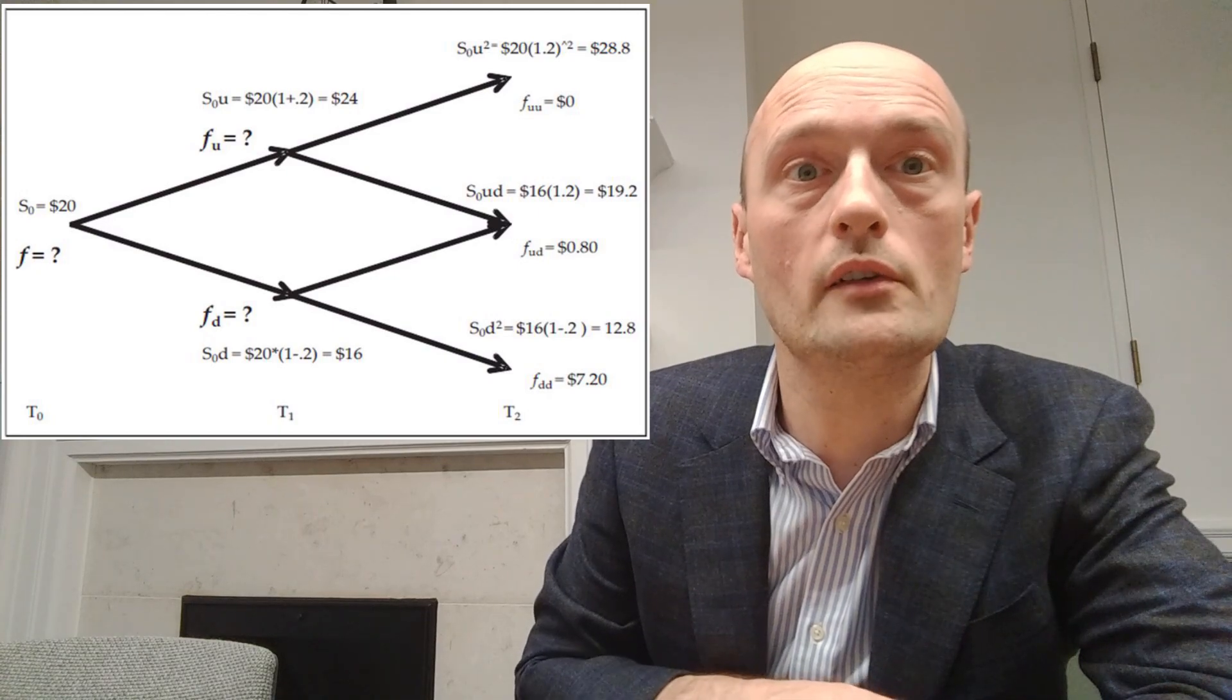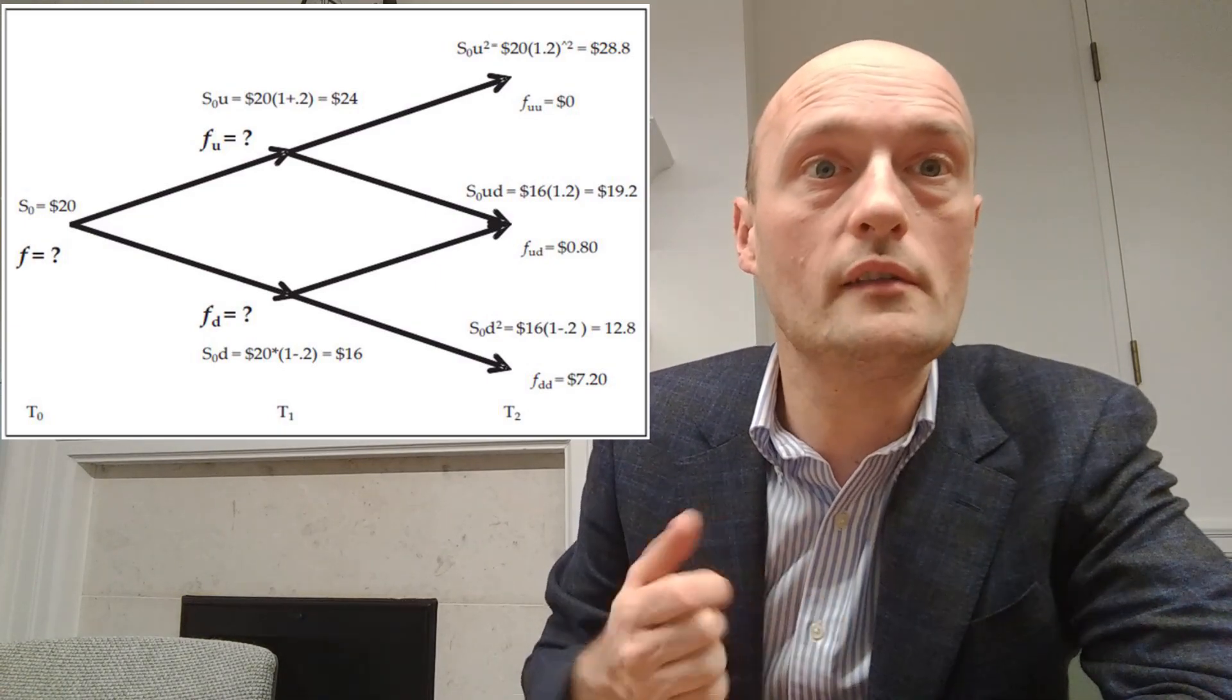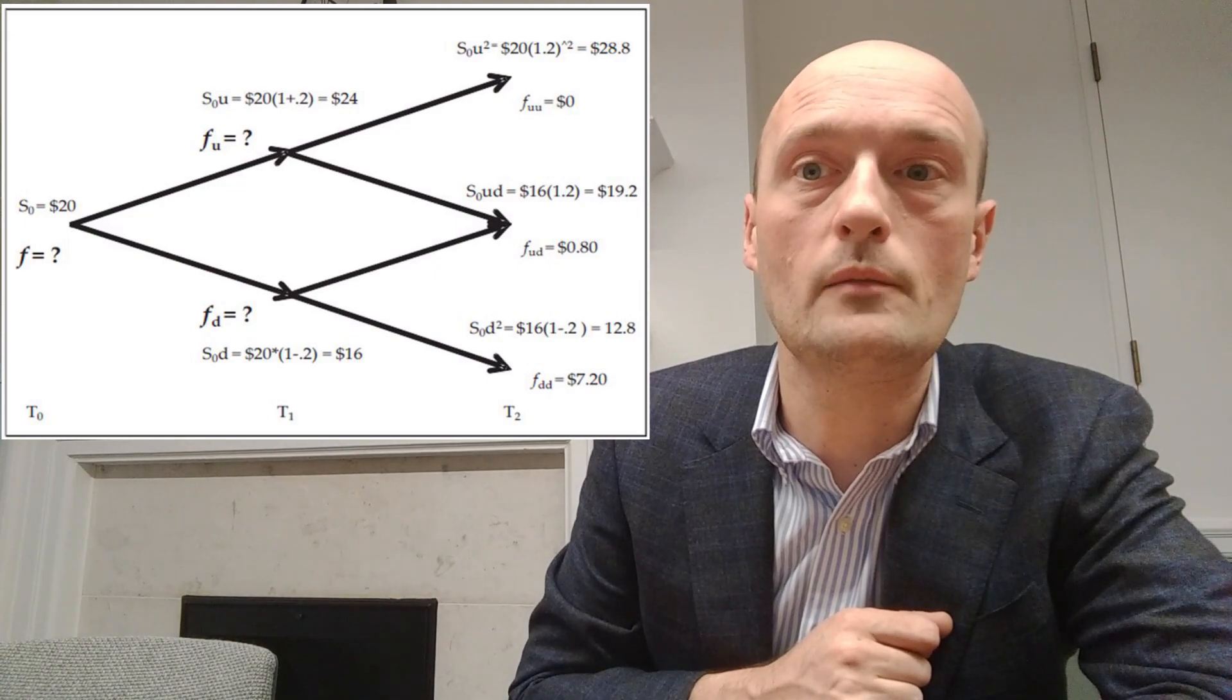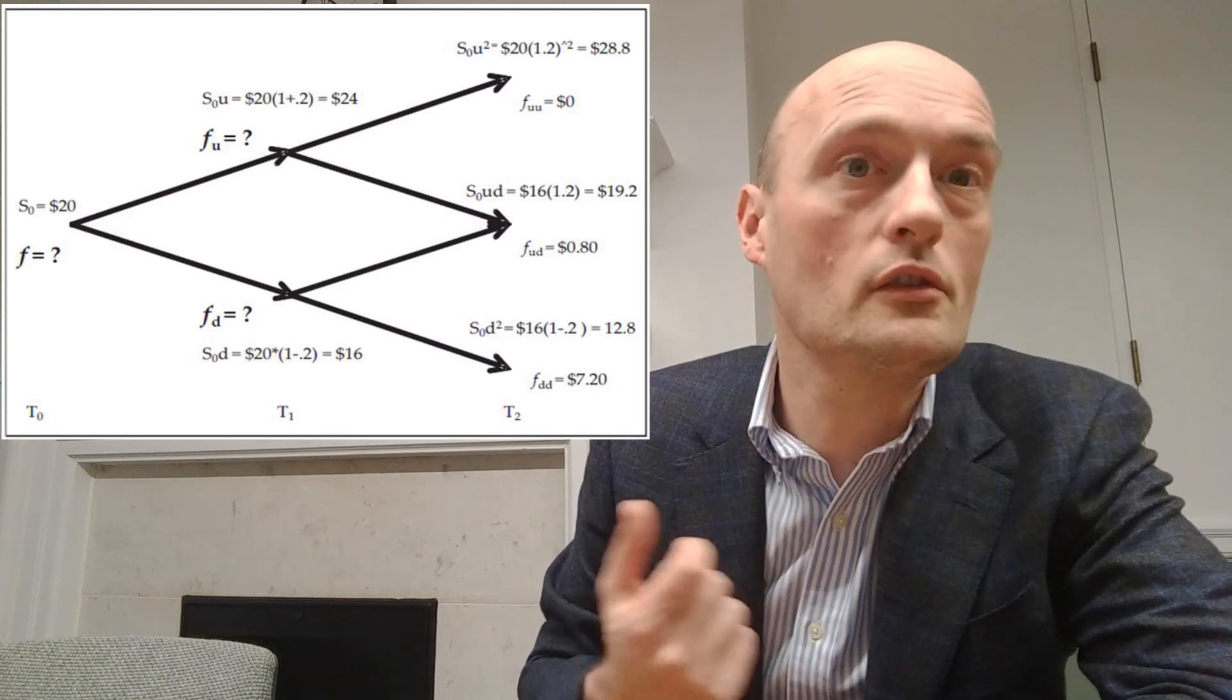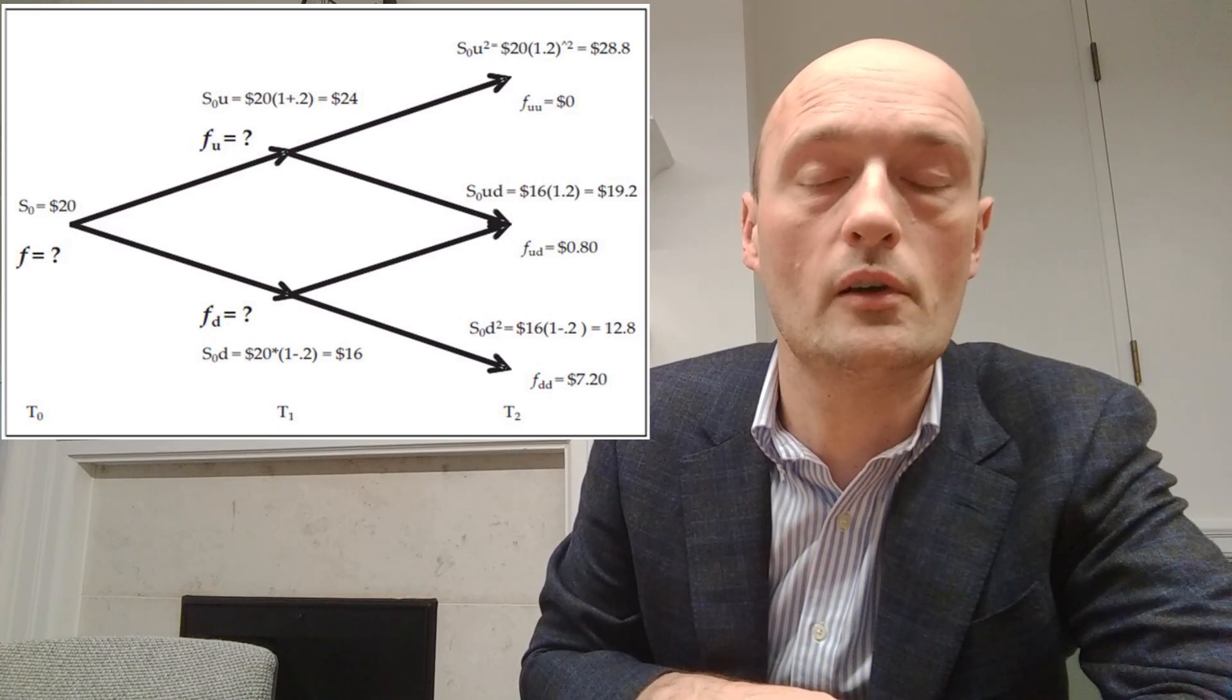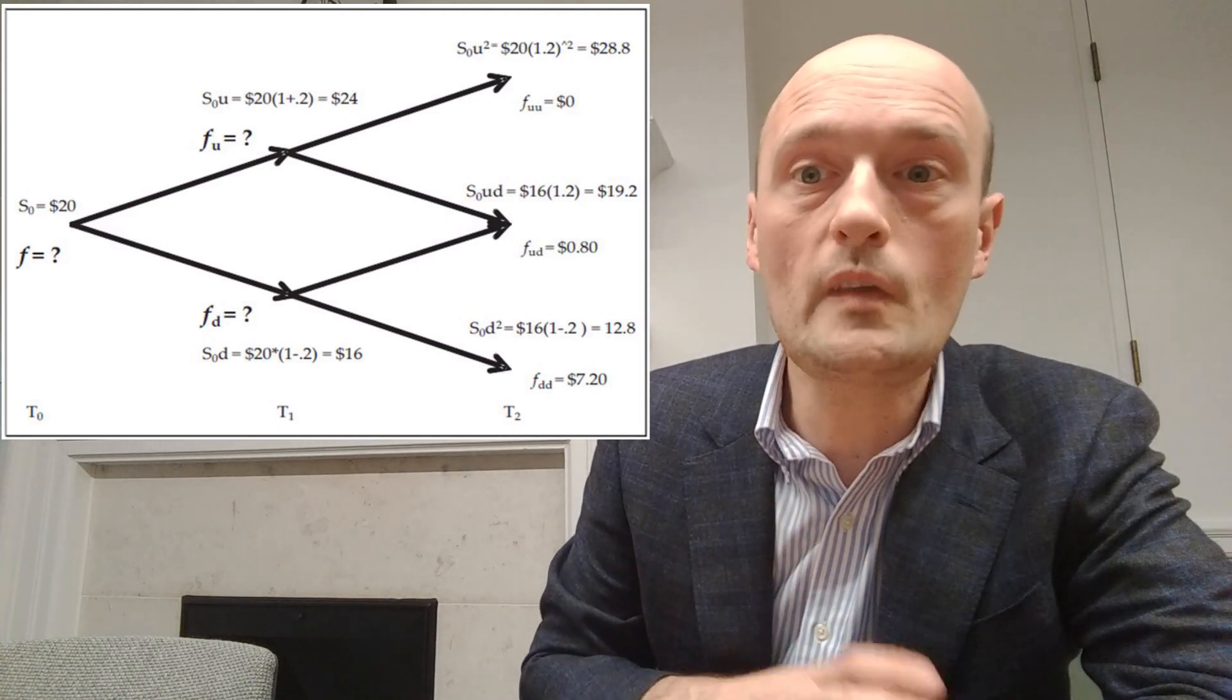So the next thing we have to do is put in what the derivative will be worth at expiration in each of those scenarios. So it's a put option so it's worth more if the price of the underlying falls and it's got a strike price of 20, which means it only takes on value if the underlying is below the price of 20. So in our up up scenario the underlying is at 28.8 and we have the right but not the obligation to sell at 20. You're not going to sell at 20 when you're able to sell at 28.8, so you would just allow that contract to expire worthless in that scenario. So the FUU, the value of the derivative or the payout of the derivative at the up up node, is zero.